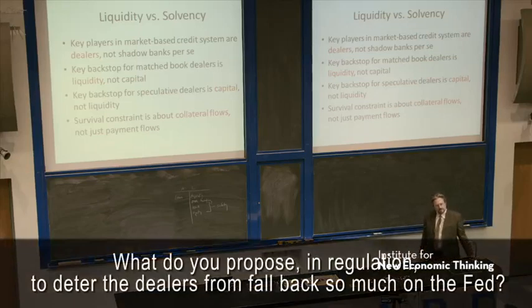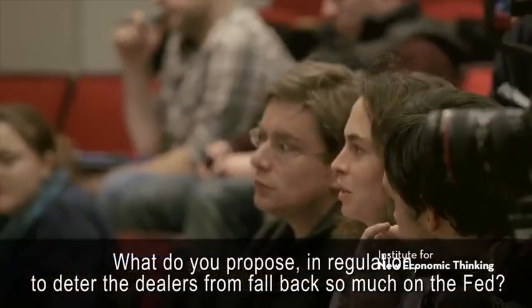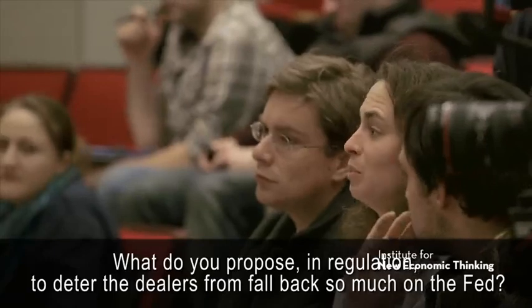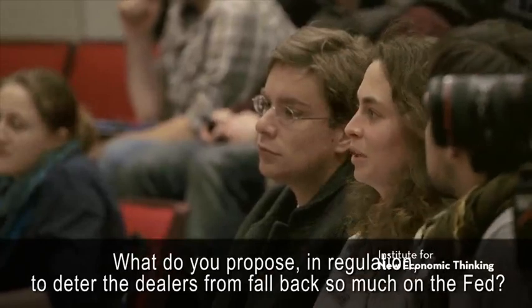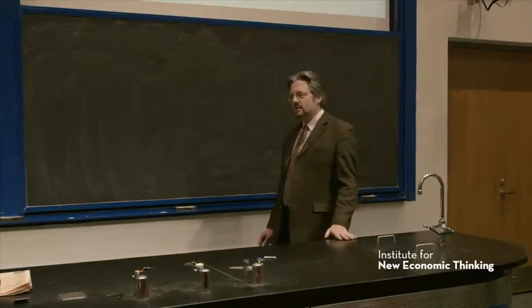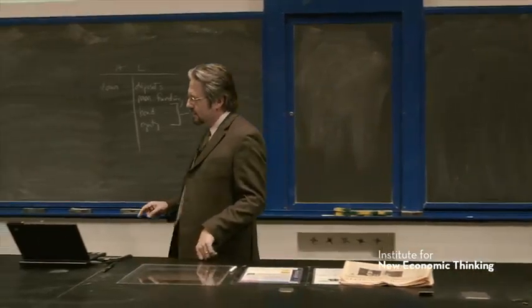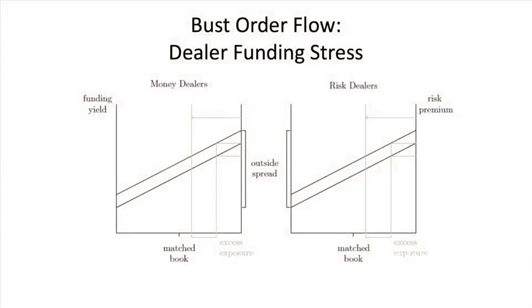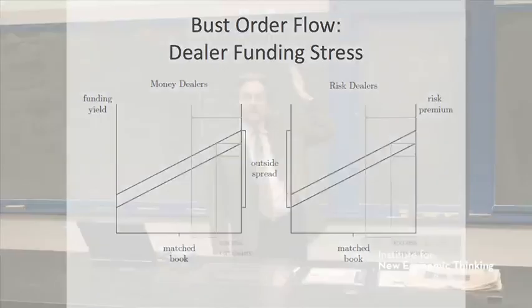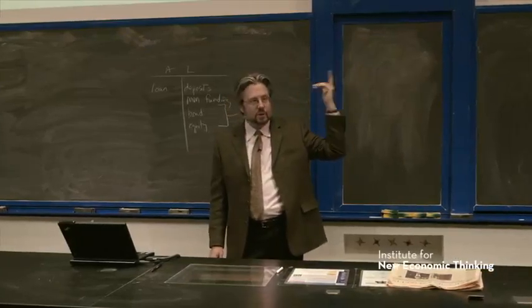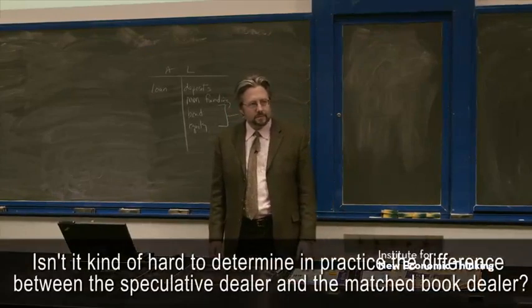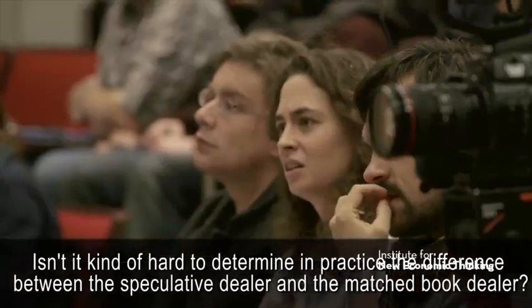Question: What do you propose in regulation to deter the dealers from falling back so much on the Fed, since that's clearly a key part of the Fed's role as backstop? The main thing is remembering this diagram — falling back on the Fed represents excess exposure, and what you want to keep from happening is kept from happening by making sure the speculative dealers have adequate capital so they're not going to be shifting their financing abilities. That's what caused this problem.